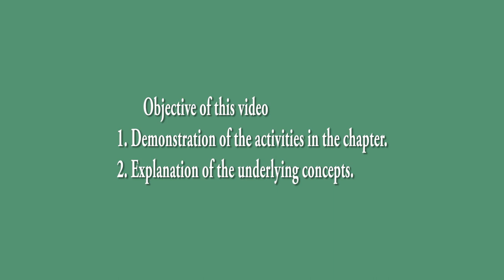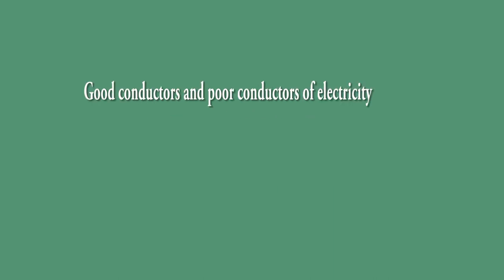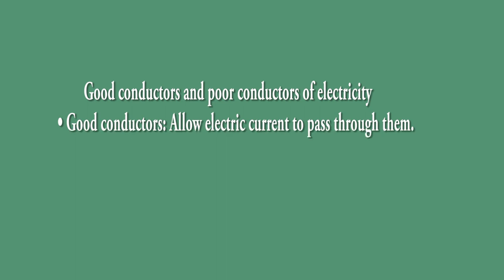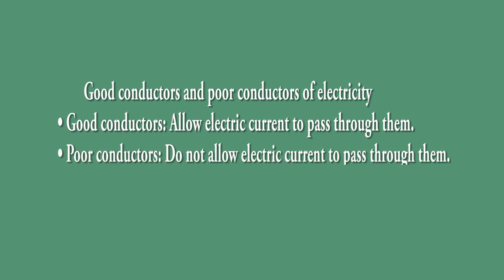The first thing we are going to talk about is good conductors and poor conductors of electricity. Good conductors are materials which allow electric current to pass through them, while poor conductors do not. In the solid state, examples of good conductors are metals like copper and aluminium, while bad conductors include wood and plastic.